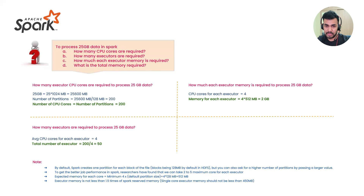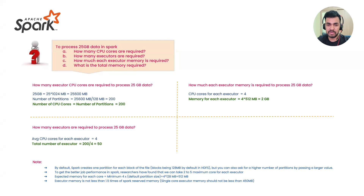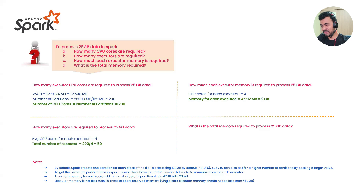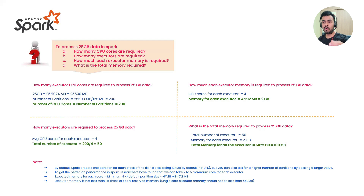If you allocate only 1 GB per executor instead of the minimum 2 GB, either you have to reduce the number of cores or the job will fail. Now moving to the fourth question: what is the total memory required to process 25GB? Total executors = 50. Each executor requires 2 GB. So 2 × 50 = 100 GB total.